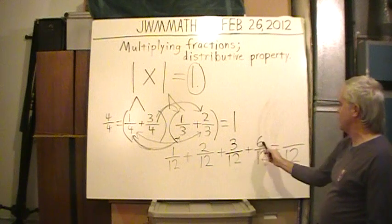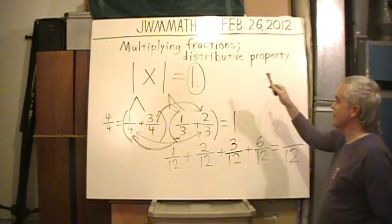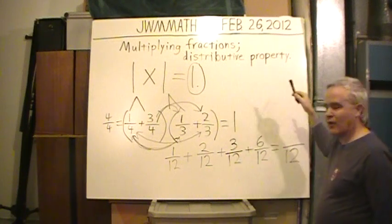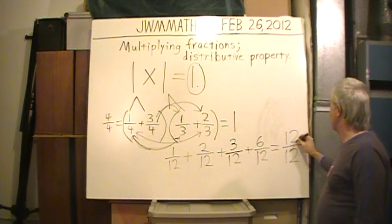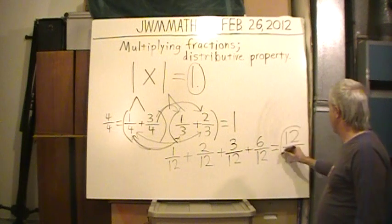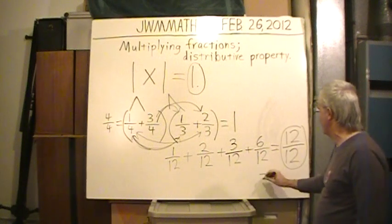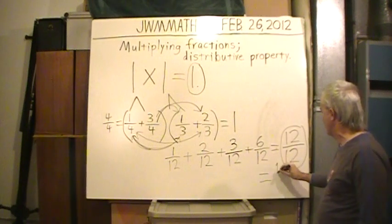1 plus 2 plus 3 plus 6. We're expecting an answer of 1. And what number divided by 12 gives 1? 12. Oh, we have 12/12. Which equals 12 divided by 12 or 1.